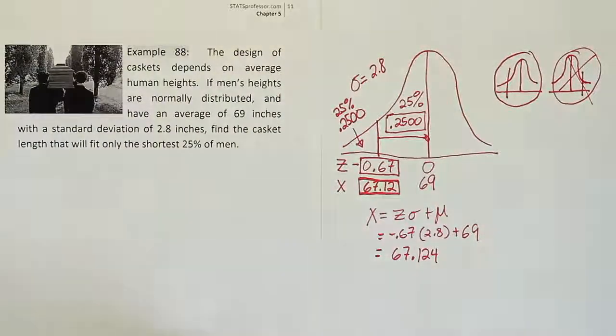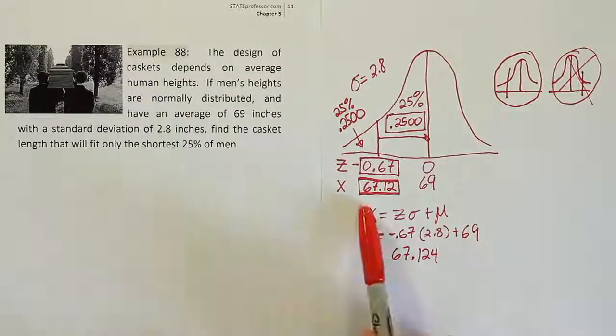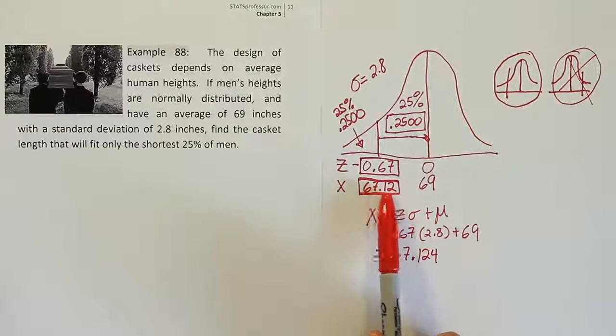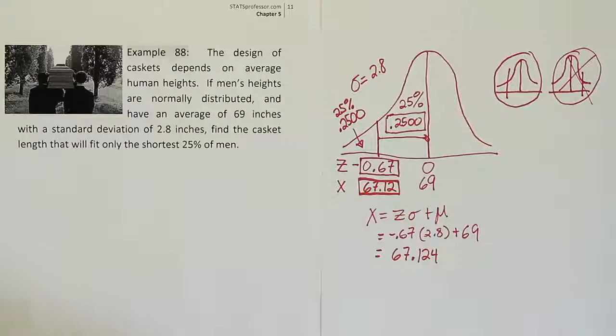Okay, so that is our answer. So about 5'7". So a man who stands at about 5'7" tall is in the shortest 25% of men. Alright. And that's it.